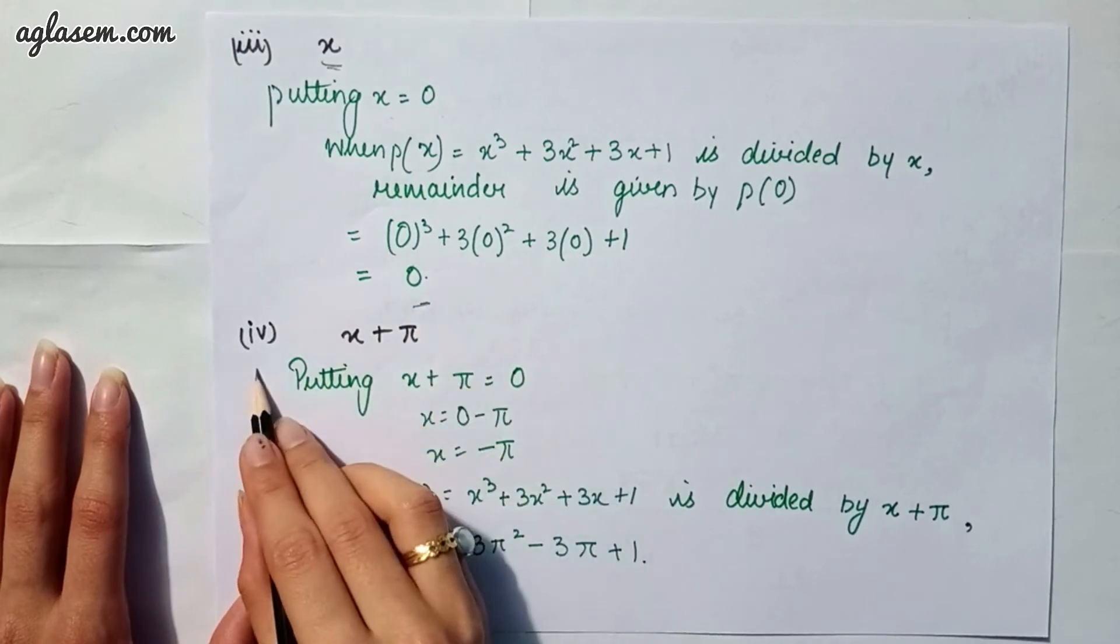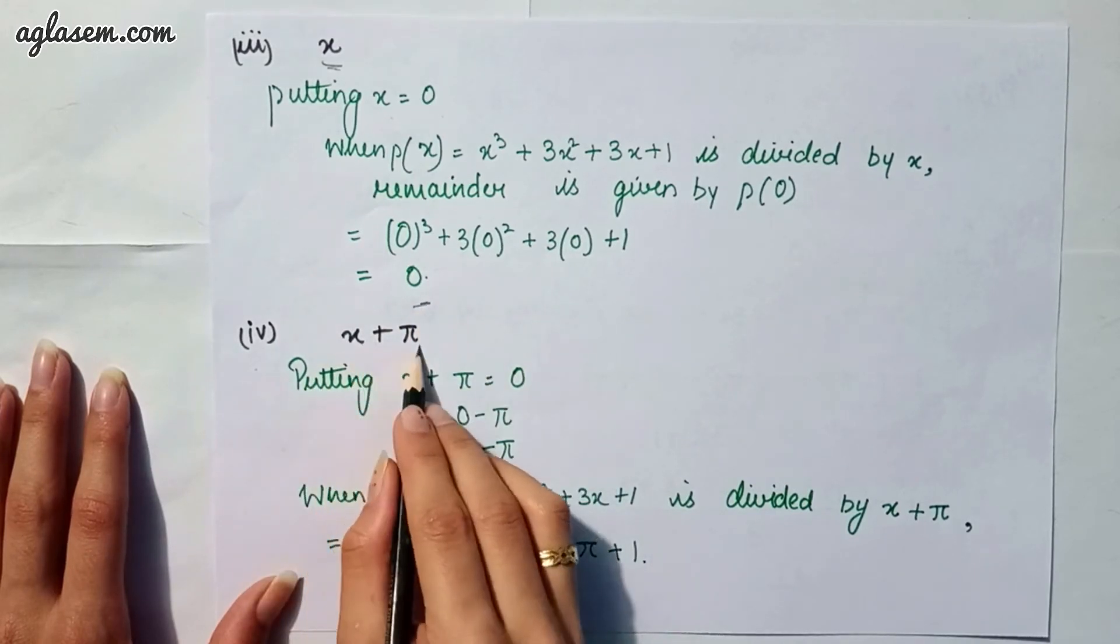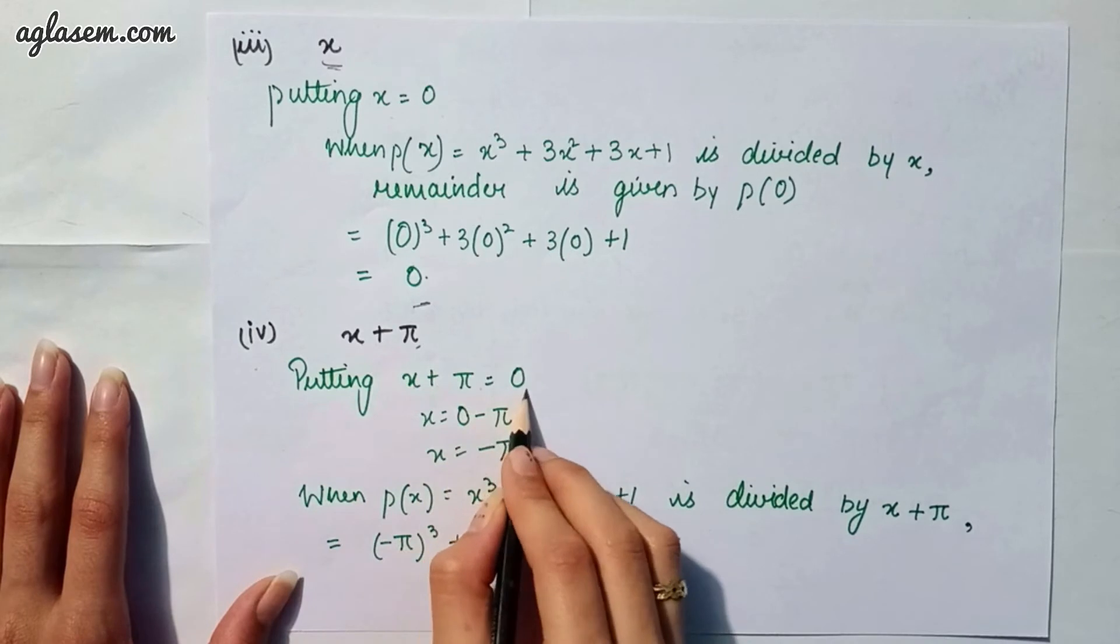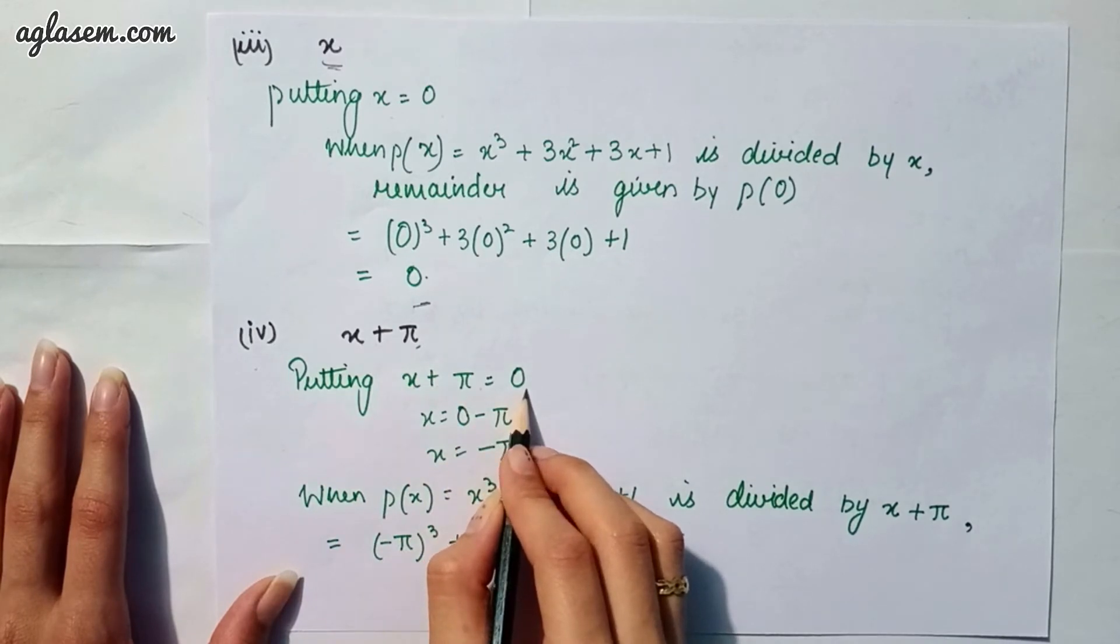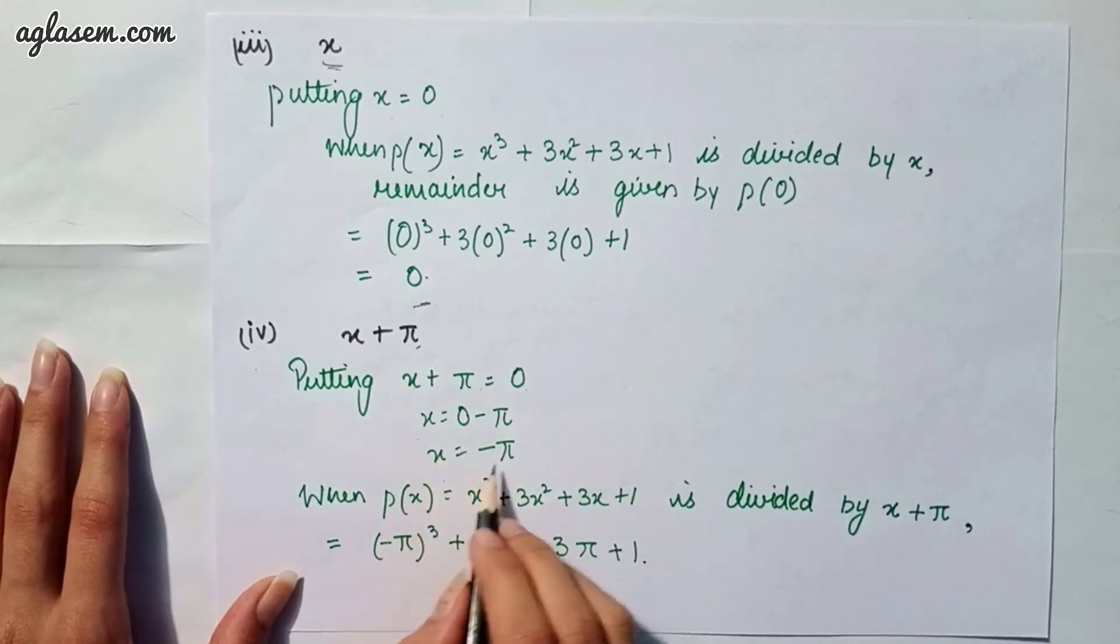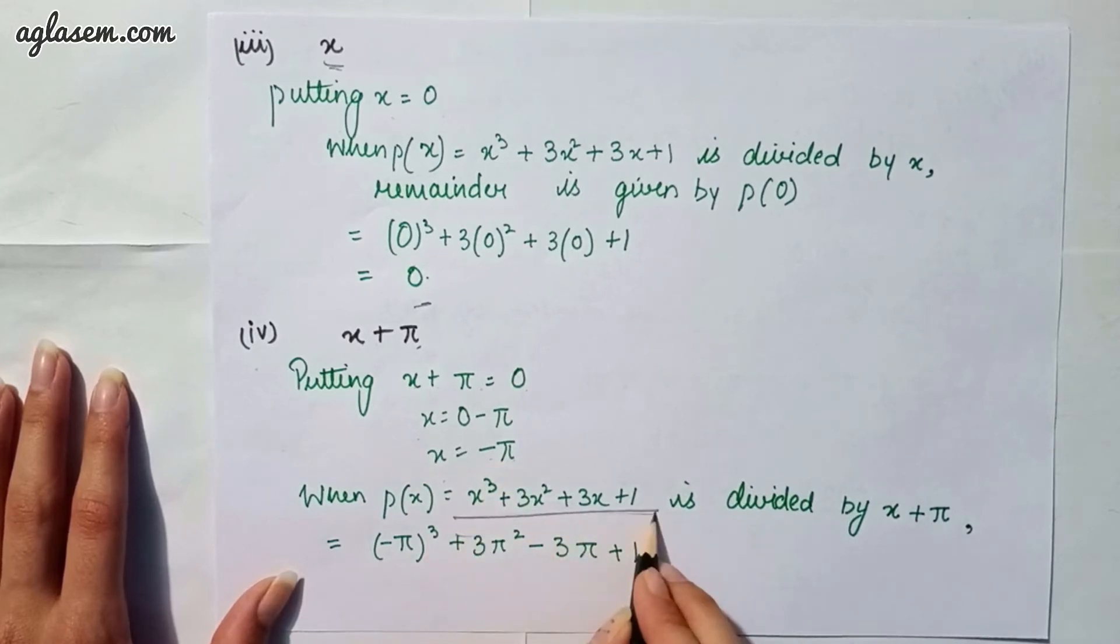Moving to our fourth part which says, x + π. Now, x + π = 0, that is, by using remainder theorem, we will get x as -π. So, again, putting -π in this equation, we will get -π³ + 3π² - 3π + 1.